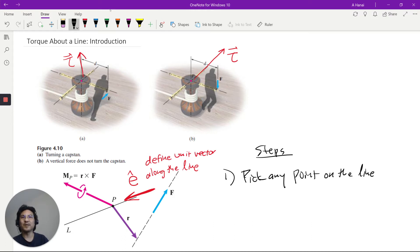So for example, point P. And then you compute the torque about that point. So for example, R cross F gives you this torque vector. R cross F. But that's torque about this point, P.